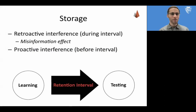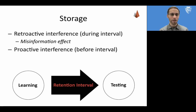The primacy versus recency effects lead nicely into our next topic, which is that of memory storage. Part of the reason that we can or can't remember things is because of the retention interval — the time between when we learn something and when we need to recall it. Anything else that happens during the retention interval can interfere with remembering. This is called retroactive interference. There's also a phenomenon called the misinformation effect, which is what happens when things that occur after you learn something essentially tamper with memory storage.